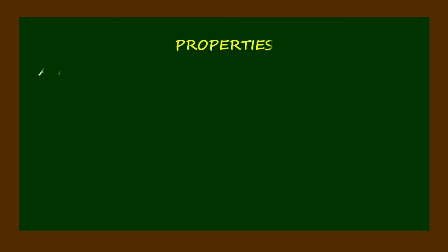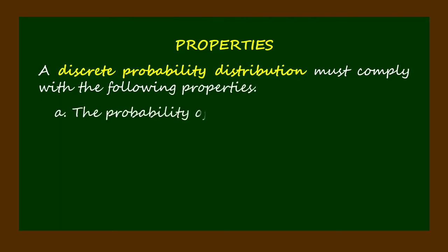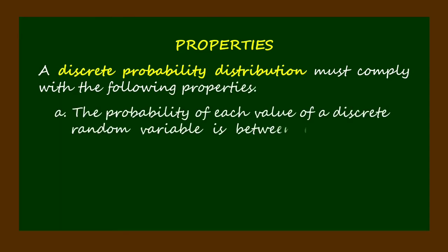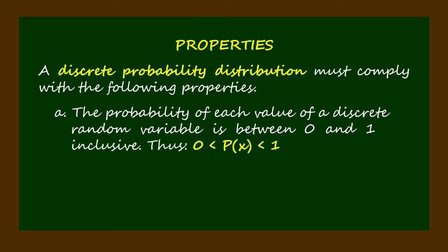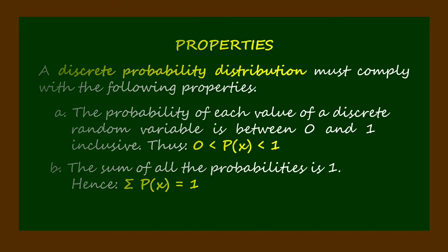A discrete probability distribution must comply with the following properties. The probability of each value of a discrete random variable is between 0 and 1, inclusive. Thus, P(x) is greater than 0 and P(x) is less than 1. And the sum of all the probabilities is 1; hence, the summation of P(x) is equal to 1.